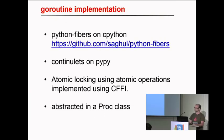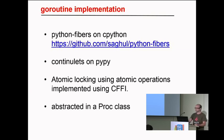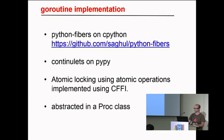Coroutines will always be executed in the same thread — the main thread — and blocking call operations will be executed in their own Python thread. To implement coroutines, I'm using Python Fiber, which is basically a port of greenlets on CPython from libuv. I contributed to Python Fiber to also have the same API on top of PyPy, so you can use Python Fiber on PyPy with the same API. I also created modules to do atomic locking — instead of using mutexes, I use atomic operations found in GCC and other implementations, and created an FFI for that. Everything is abstracted in a proc class, so if you want to use greenlets you can write your own abstraction to build coroutines.